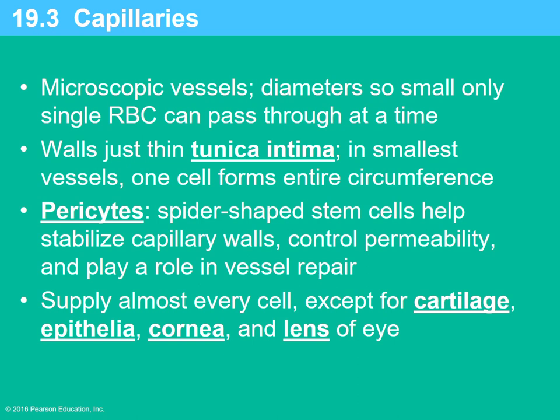Capillaries are the smallest blood vessels — the diameter is small enough that only one red blood cell can pass through at a time. Their walls are very thin to allow nutrient and gas exchange. Pericytes are spider-shaped stem cells that help stabilize the capillary walls, which are only about one cell thick. Capillaries supply every cell with specific gases and nutrients and remove waste products. They are found everywhere in all tissues except cartilage, epithelium, the cornea, and the lens of the eye.